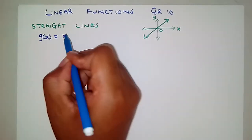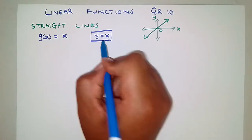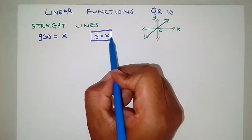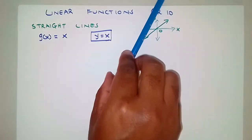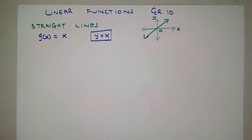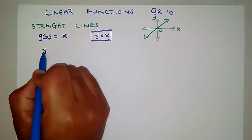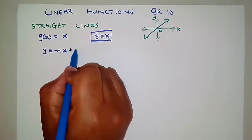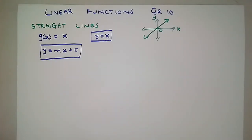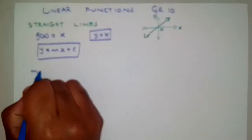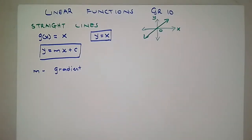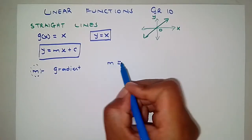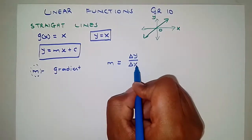So you have g(x) = x, or y = x for example. Your function might be shifted or multiplied by a value and things like that. This function has a general equation — a standard form — y = mx + c. You'll come across this in analytical geometry as well. Here, m stands for the gradient of the graph — the steepness or gentleness of the graph. m has the formula: m equals the change in y divided by the change in x.